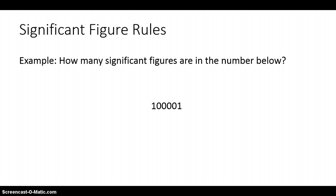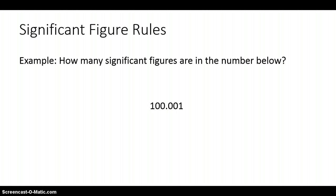Example three: how many significant figures are in the number below? There are six significant figures, and rule number two proves this. Example four is similar — because all the zeros are between non-zero numbers, rule number two tells us there are six significant figures in that number as well.